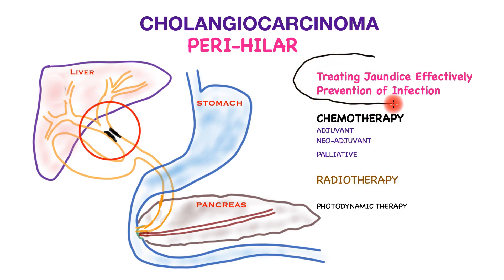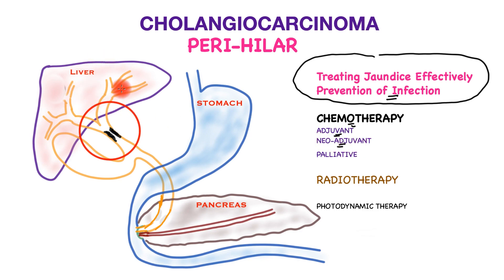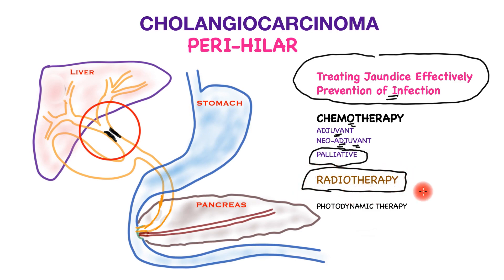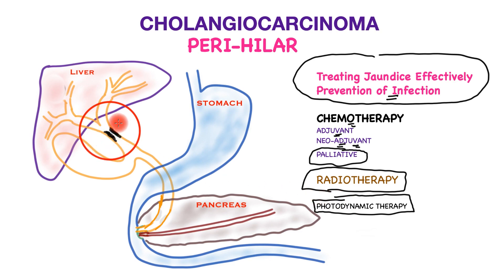Regardless of treatment pathway, it is very important to manage jaundice effectively and prevent biliary infection wherever possible. Chemotherapy is deployed in three settings: adjuvant — after surgical tumor removal; neoadjuvant — for locally advanced disease, sometimes combined with techniques to grow the liver and reduce metastatic risk; and palliative — for patients not suitable for surgery. The role of radiotherapy is less well defined, though patients with incomplete tumor removal have shown some benefit from post-surgical radiotherapy. Photodynamic therapy, using light-activated products to generate oxygen radicals near the tumor, was shown to locally control the tumor, improve stent efficiency, and may improve quality of life.